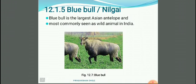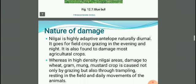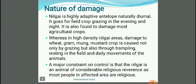The fifth animal is the blue bull or nilgai. This blue bull is the largest Asian antelope and most commonly seen as a wild animal in India. The nilgai is a highly adaptive antelope, naturally diurnal, and it goes for field crop grazing in the evening and night. It is also found to damage most agricultural crops.